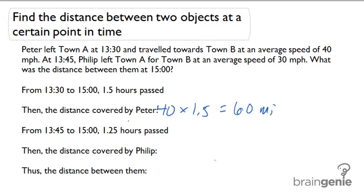Now we can calculate the distance covered by Philip. 30 times 1.25 equals 37.5 miles.